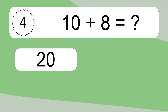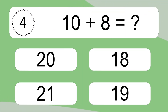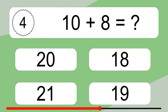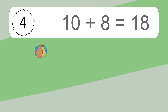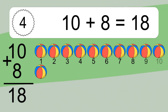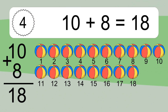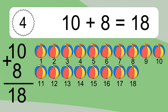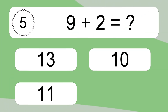10 plus 8 equals what? 10 plus 8 equals 18. Let's count it: 1, 2, 3, 4, 5, 6, 7, 8, 9, 10, 11, 12, 13, 14, 15, 16, 17, 18.